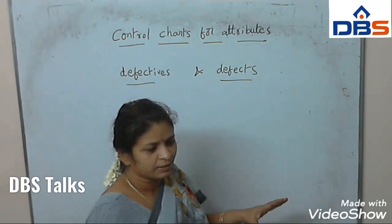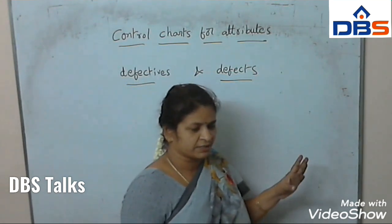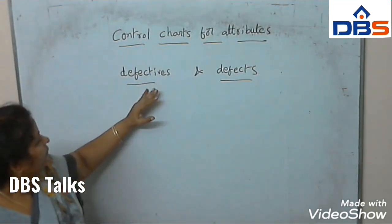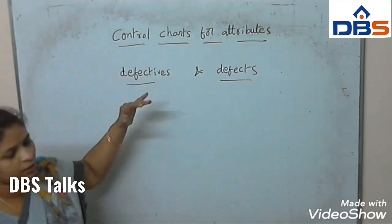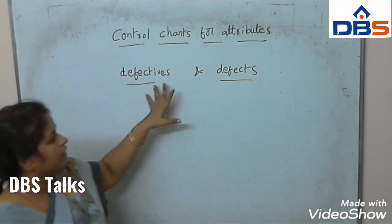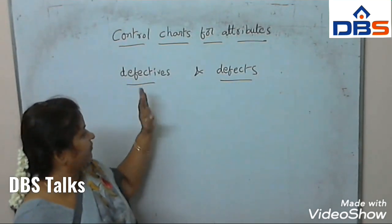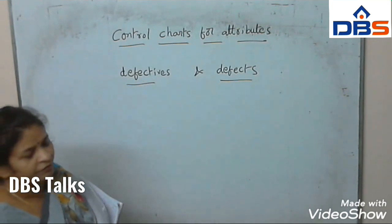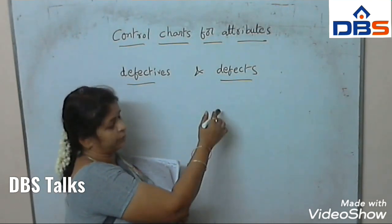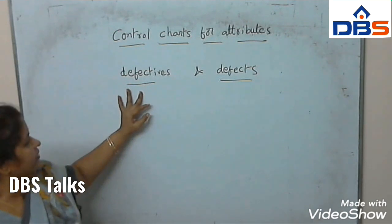In all the parts, the manufactured article should conform to all specifications. If it fails one specification, then we say that it has a defect. If an article has one or more defects, then we say that it is a defective article.